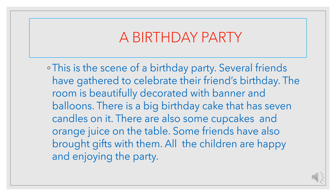The first sentence of the composition should always be the introduction sentence in which we introduce what the scene is about. Since this is a birthday party scene, we are going to write the first sentence as: This is the scene of a birthday party. Several friends have gathered to celebrate their friend's birthday. The room is beautifully decorated with banner and balloons. There is a big birthday cake that has seven candles on it. There are also some cupcakes and drinks. Some friends have also brought gifts with them. All the children are happy and enjoying the party.